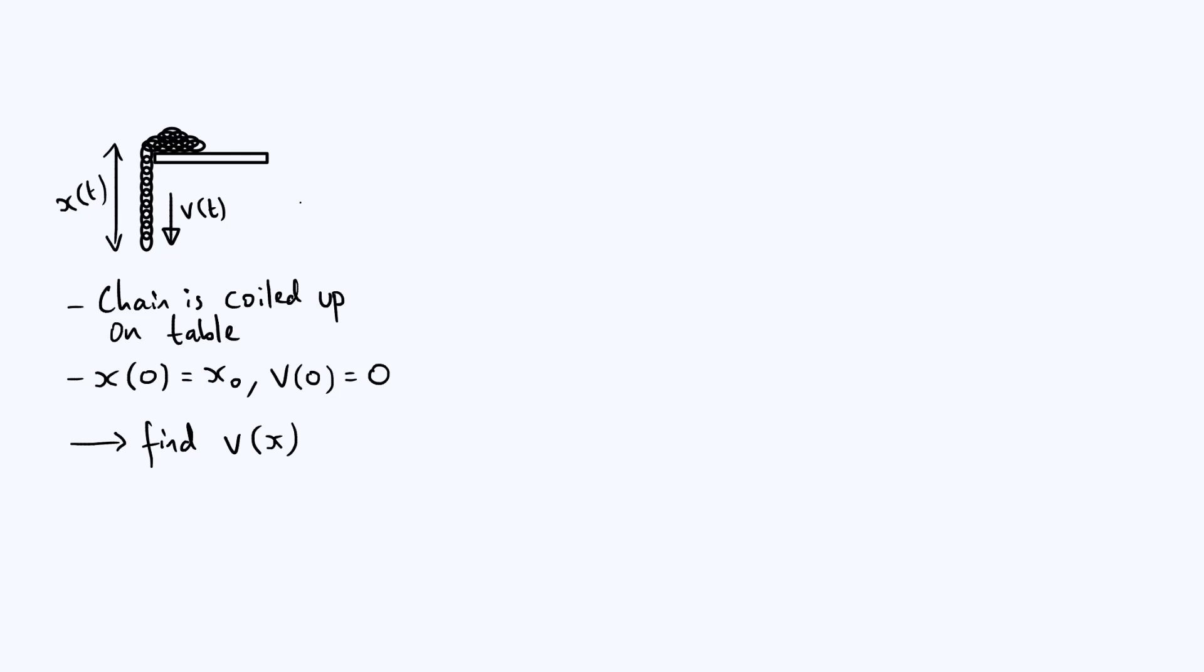We've got some initial conditions. Firstly, that x(0) = x₀. All that's saying is that at t equals zero, there is a length of chain x₀, which is a constant, just hanging down off the edge, and v(0) = 0, meaning we release it from rest when t is zero. So what we want to do is find v as a function of x, in other words, how fast the chain is going as a function of how much of it is hanging down off the edge.